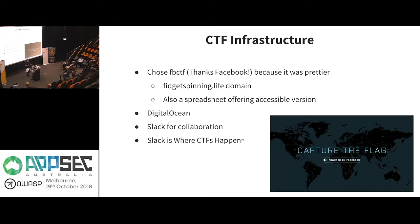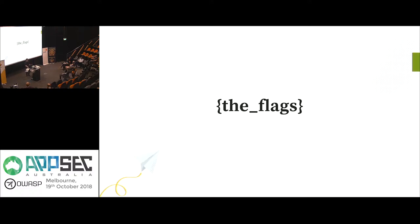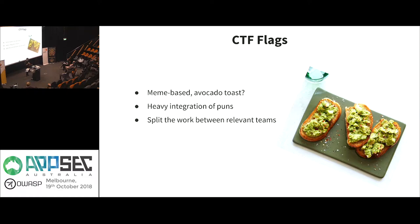We used DigitalOcean to host our stuff and Slack for collaboration — 'where CTFs happen,' a play on our slogan 'where work happens.' When thinking about making the flags, we wanted to make them meme-based with millennial appeal — avocado toast, heavy integration of puns. We split up the work between security teams, letting people with specialties flourish in making their own puzzles, and collaborated on miscellaneous challenges and trivia.